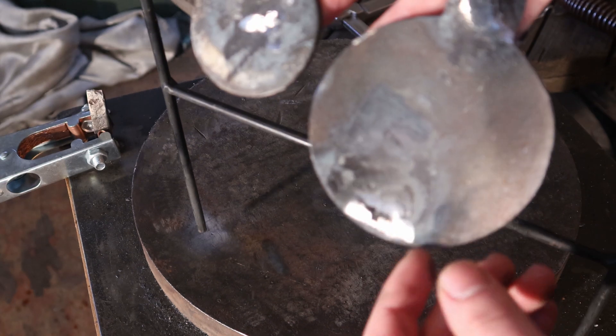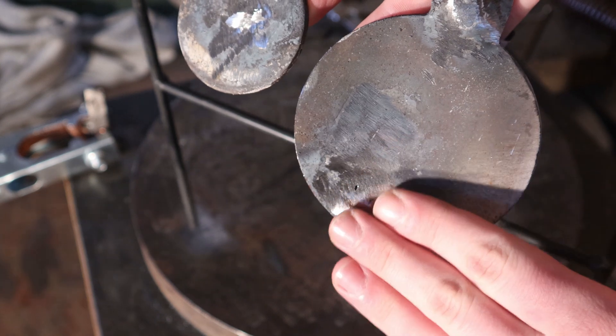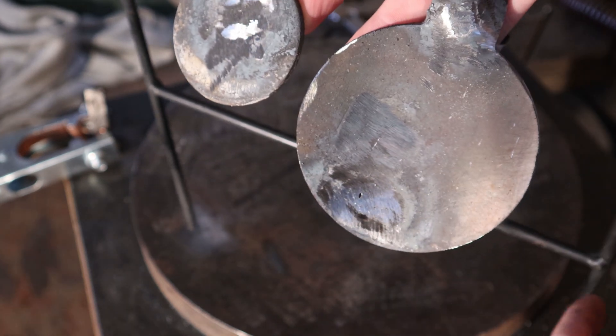Now that I've ground off all that extra material, I just have to take some sandpaper or a flap wheel on the grinder, go over this, take off all the scale, repaint it, and it'll be good to go.